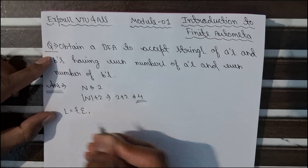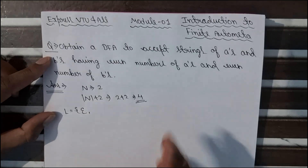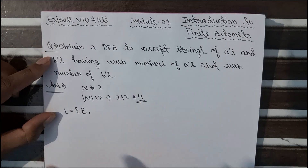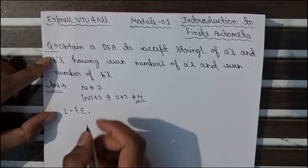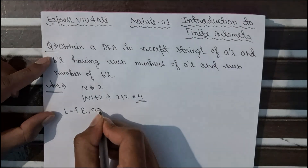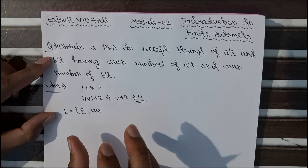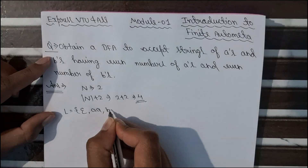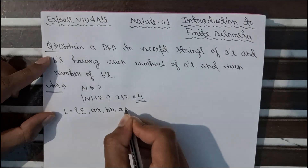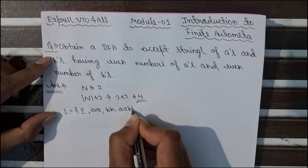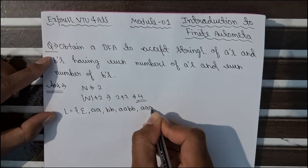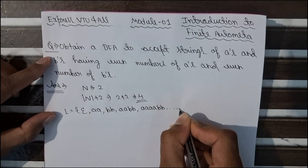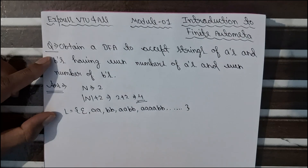According to our language, the strings that should be accepted by our DFA are strings with even number of A's and even number of B's. First it will be epsilon — epsilon means nothing, which is 0, and 0 is an even number, so epsilon will be accepted. Then strings with even number of A's and 0 B's are also accepted. Then BB — even number of A's and even number of B's — and so on.